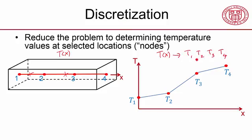That's called discretization. And it's easier to determine a finite number of values rather than a function. Determining unknown functions is hard. Determining a finite number of values is not as hard.